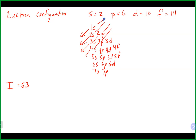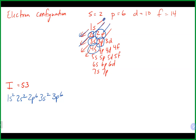Let's write the electron configuration for iodine. We're going to start up here — we've got a long way to go. So we'll go with 1s2, then 2s2, then 2p6, then 3s2. We're up to 12 at that point, with a little bit to go still.